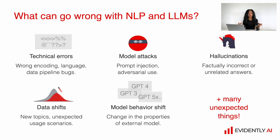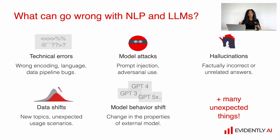Let me start from the standard issues we already discussed for tabular data. There are data service issues or technical errors with processing data – for example, wrong encoding, unexpected language, data processing bugs, etc. There can also be data shifts, like new topics never seen before during training or unexpected usage scenarios. However, together with these standard issues, there can be some specifics: model attacks like prompt injection or adversarial usage; changes in the properties of external models after retraining or changes in the model's output; and hallucination problems, where our model generates factually incorrect or unrelated answers.